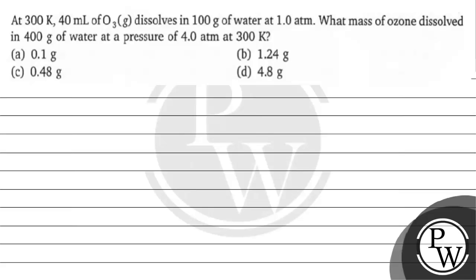Hello, let's read this question. The question says: at 300 Kelvin, 40 ml of ozone dissolves in 100 gram of water at 1 atm. What mass of ozone dissolved in 400 gram of water at a pressure of 4.0 atm at 300 Kelvin? Option A: 0.1 gram, Option B: 1.24 gram, Option C: 0.48 gram, Option D: 4.8 gram.